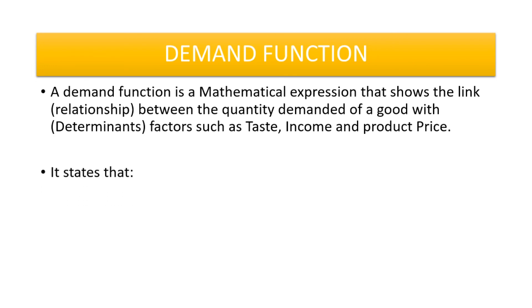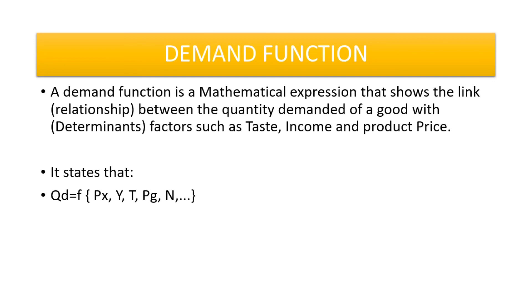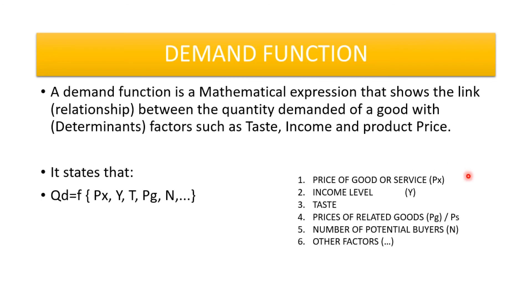The demand function states that quantity demanded is a function of the price of the product, the income level, the taste, the price of the related good, the number of potential buyers, and so on. Here are the determinants of demand. We take the symbols and put them in this function. So, quantity demanded is a function of: price of a good or service, income level, taste, price of related goods, number of potential buyers, and lastly all other factors — which we discussed when talking about the determinants of demand.